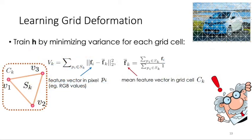Therefore, our main loss to train the network edge is to minimize the variance of the features inside the grid, such as in this equation. Fi represents the feature vector of pixel i.